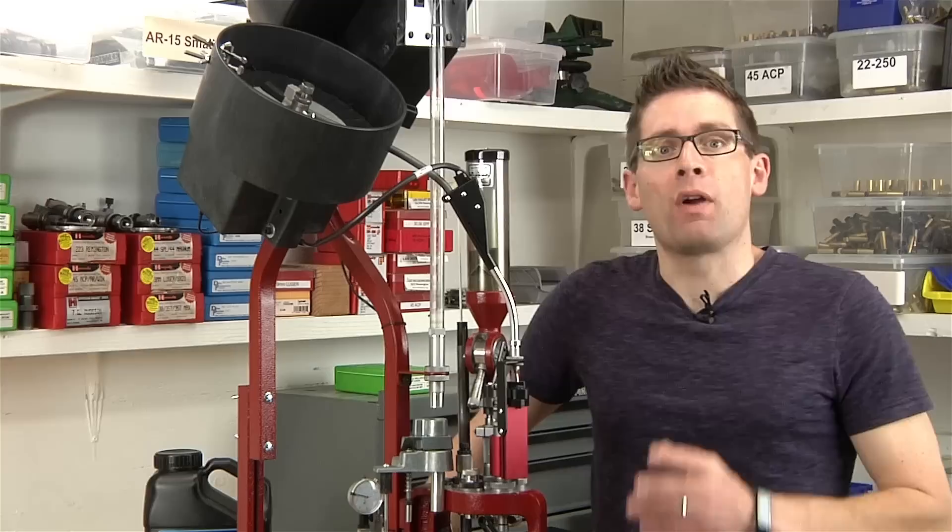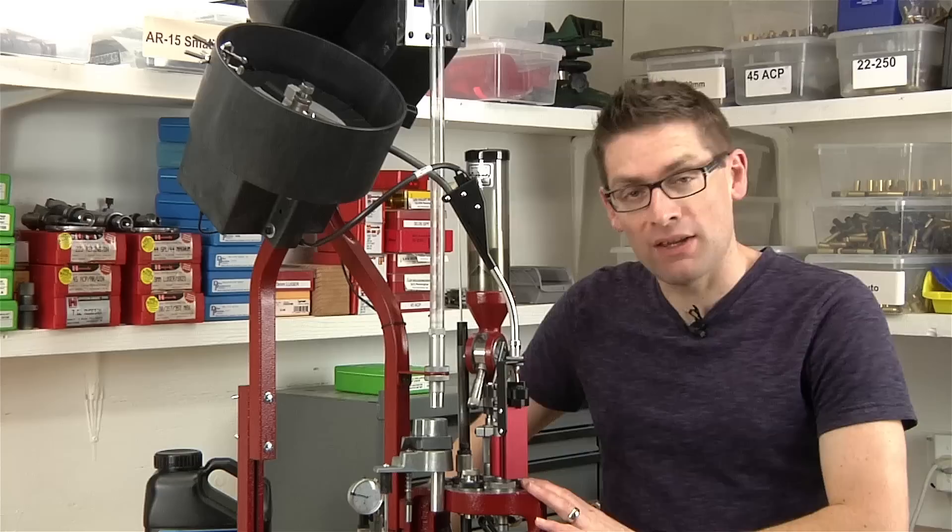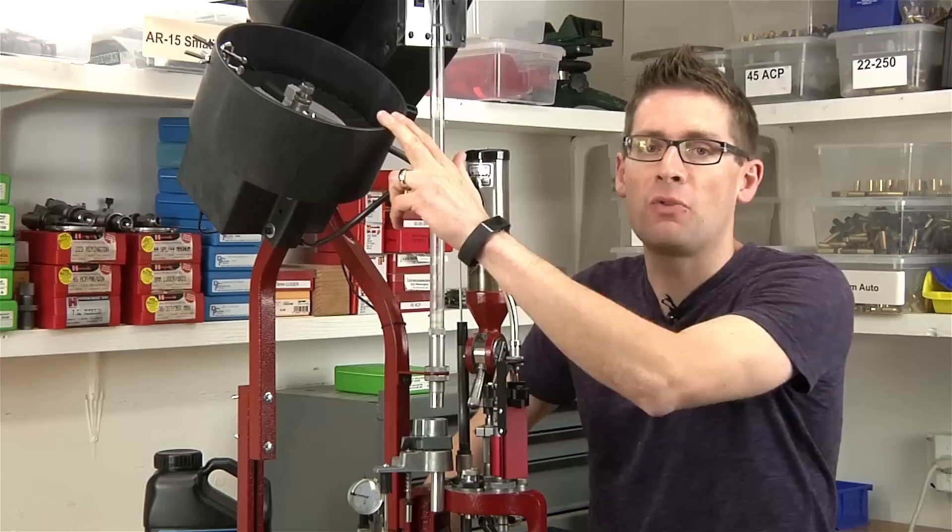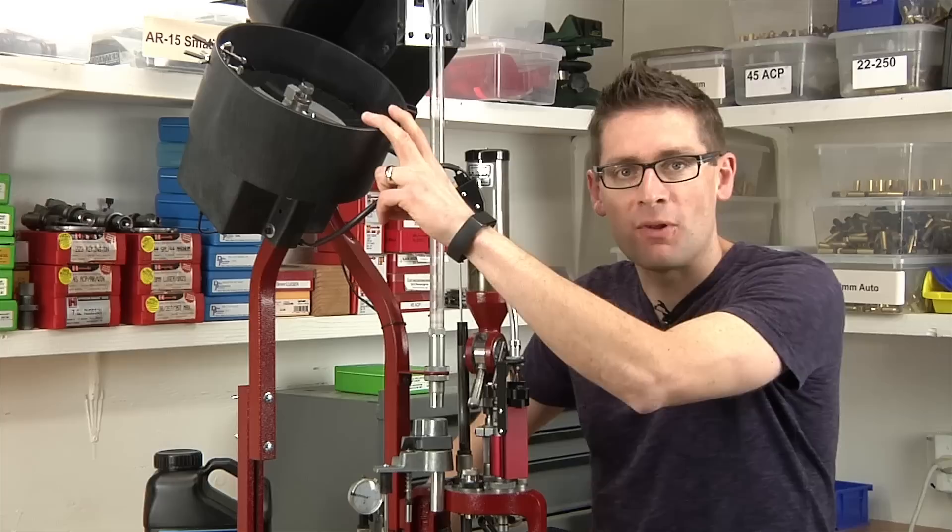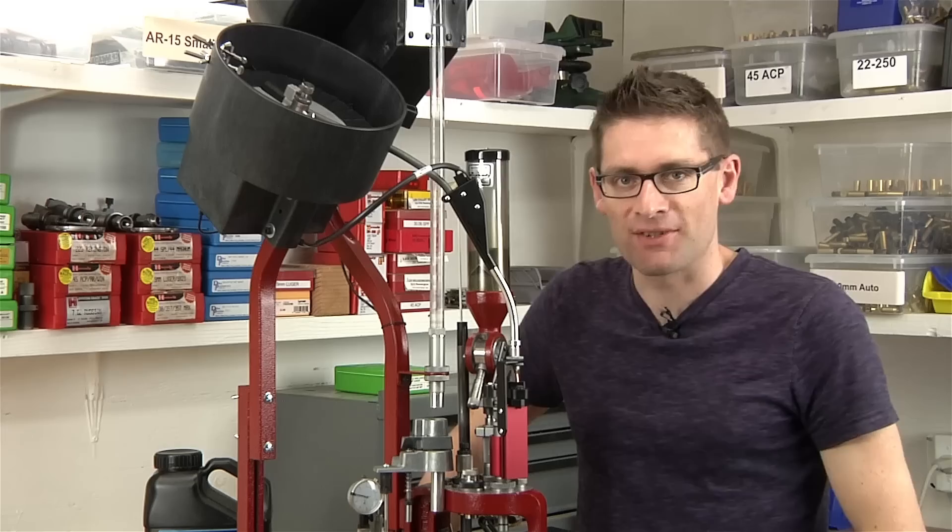And that calls for a great, effective, and efficient reloading setup, like this Hornady Lock and Load AP five station progressive press, coupled with the Hornady Lock and Load rifle bullet feed system. In this video, we're going to continue our series about this rifle bullet feed system by showing full progressive setup and operation loading .308 Winchester. Let's get rolling.